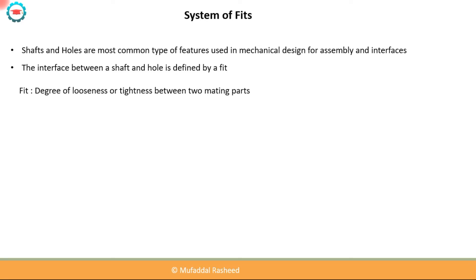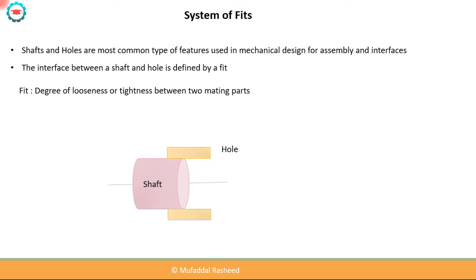In any mechanical design having multiple parts, there will be shafts and holes which are associated and have mating features. The definition of those mating features is generally done by defining the fit. If you have a shaft and a hole as shown here, the relative difference between the size of the shaft — that is the OD of the shaft — and the ID of the hole will define the nature of fit.